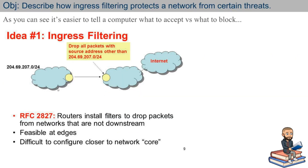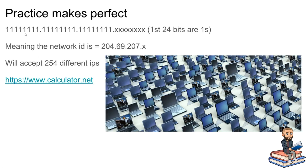Just because practice makes perfect — when you're looking at something that says slash 24, that means the first 24 bits are all 1s, which means the network ID is just that number. For every host, that could be a different value in the last octet, which means that network is a size of possibly 254 different IPs.